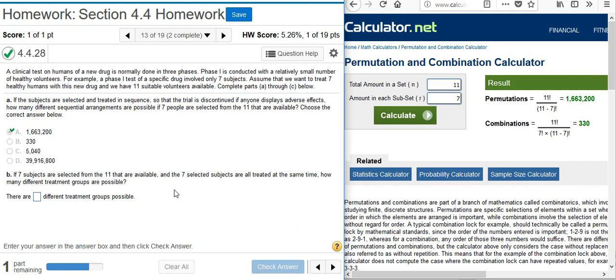Now Part B says: If seven subjects are selected from the eleven that are available, and the seven selected subjects are all treated at the same time, how many different treatment groups are possible?